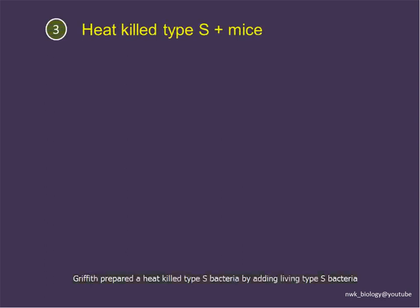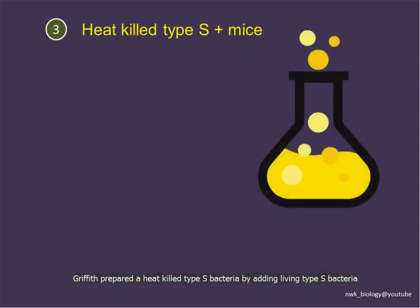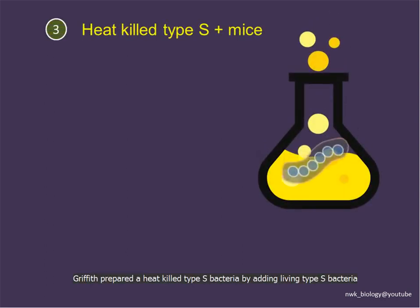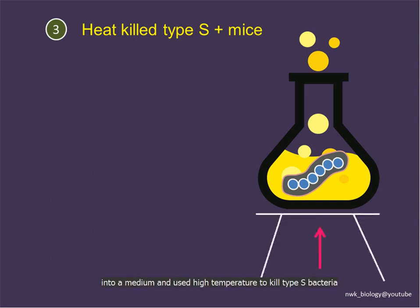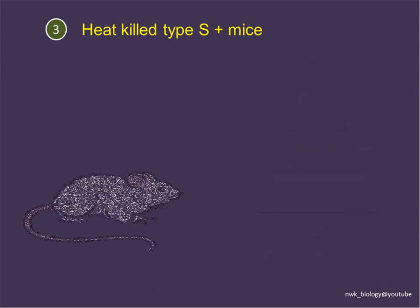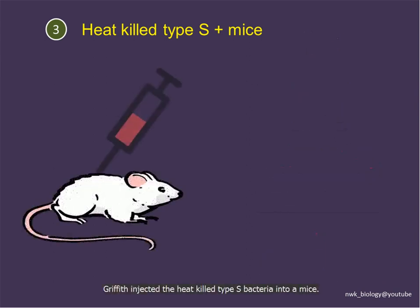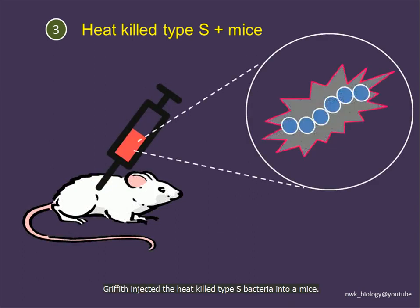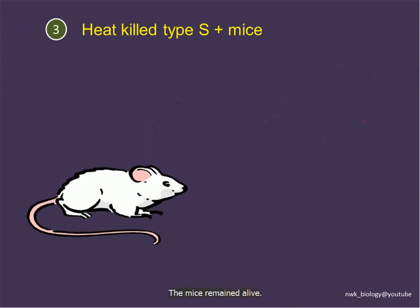In another experiment, Griffith prepared heat-killed type S bacteria by adding living type S bacteria into the medium and using high temperature to kill them. Now it becomes non-virulent. Griffith injected the heat-killed type S bacteria into the mice, and the mice remained alive.